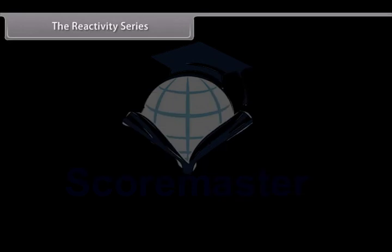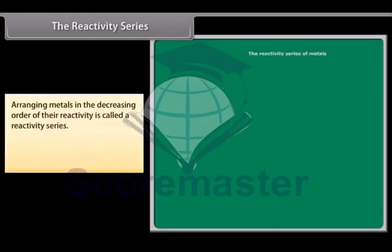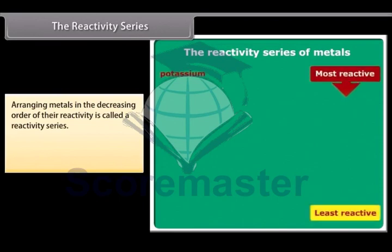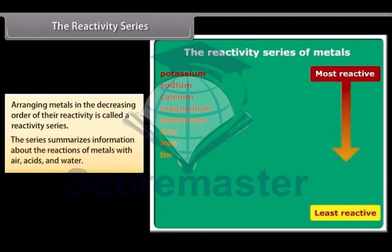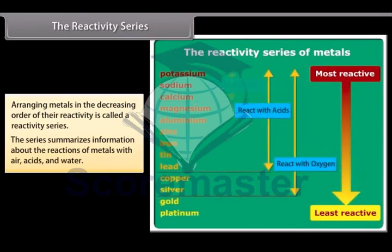The reactivity series. Metals being arranged in the decreasing order of their reactivity is called a reactivity series. It is used to summarize information about the reactions of metals with air, acids and water.